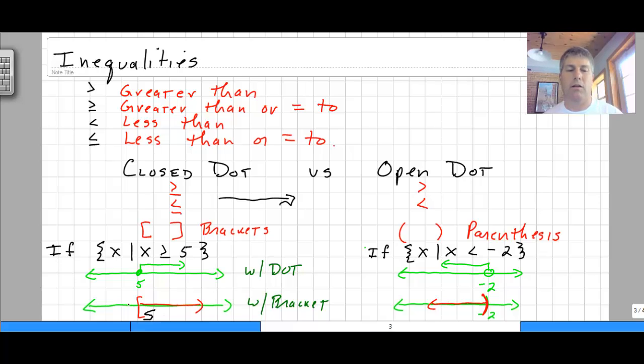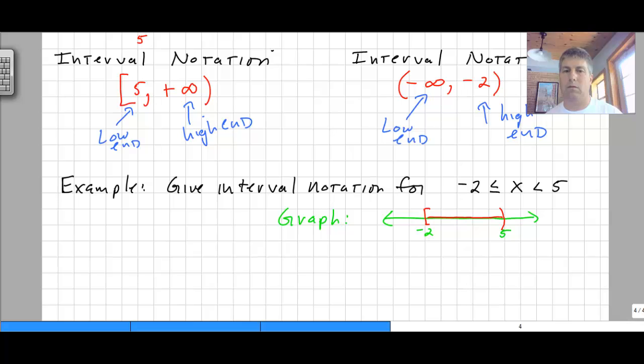Whereas over here, the bracket indicates we're going to include 5. Okay? So closed dot now is a bracket. Open dot is now parentheses.